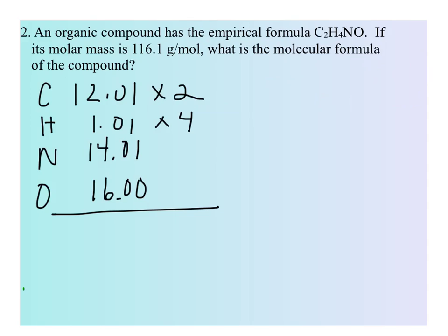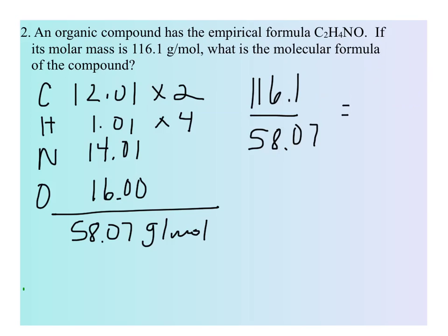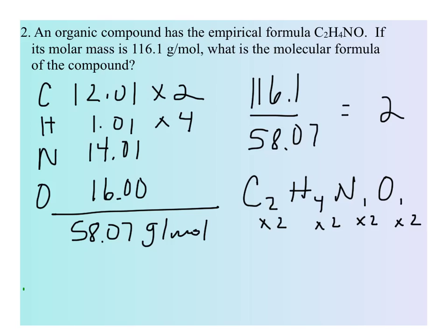Let's start with the molar mass for the empirical formula. Carbon has a molar mass of 12.01 grams per mole, and there are two carbons in the chemical formula. Hydrogen is 1.01 grams per mole, and there are four hydrogens. Nitrogen is 14.01 grams per mole with just one nitrogen, and oxygen is 16 grams per mole with just one oxygen. The total is 58.07 grams per mole. Comparing 116.1 to 58.07, the answer is about 2. So we're going to take all of our subscripts and multiply them by 2. C2H4N1O1 multiplied by 2 gives us C4H8N2O2. That is the molecular formula.